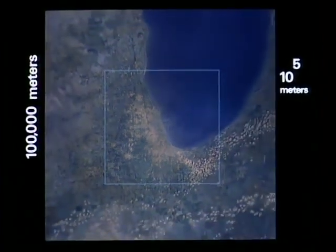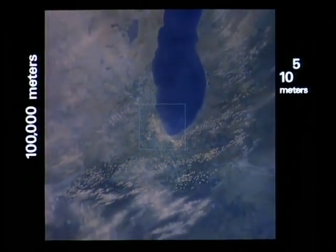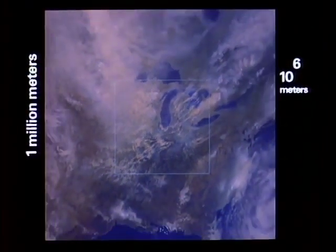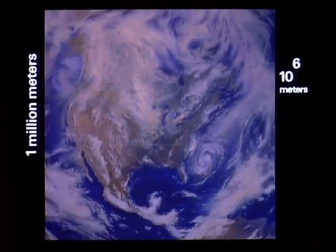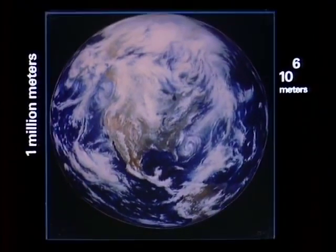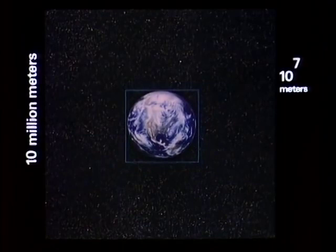10 to the 6th, a one with six zeros, a million meters. Soon the earth will show as a solid sphere. We are able to see the whole earth now, just over a minute along the journey. The earth diminishes into the distance, but those background stars are so much farther away they do not yet appear to move.